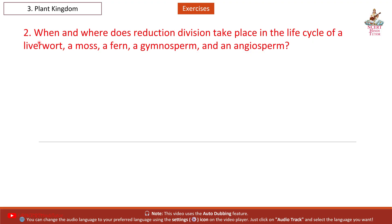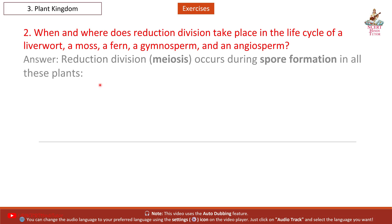Question 2: When and where does reduction division take place in the life cycle of a liverwort, a moss, a fern, a gymnosperm, and an angiosperm?